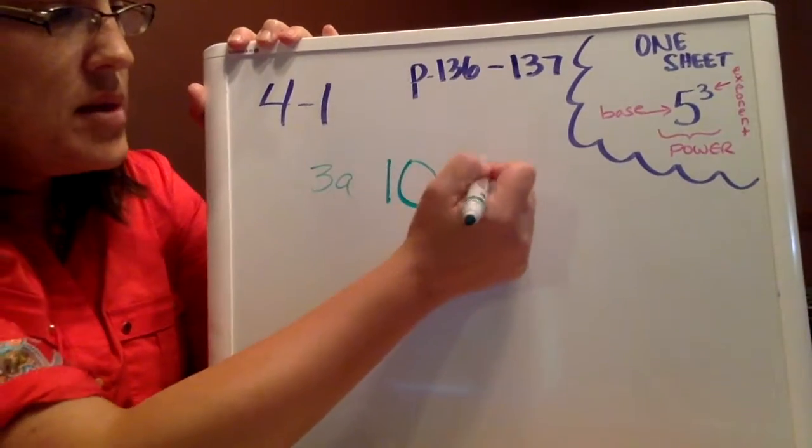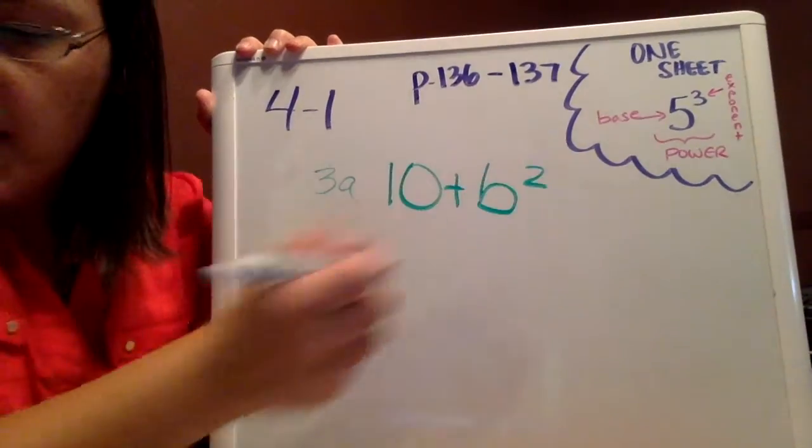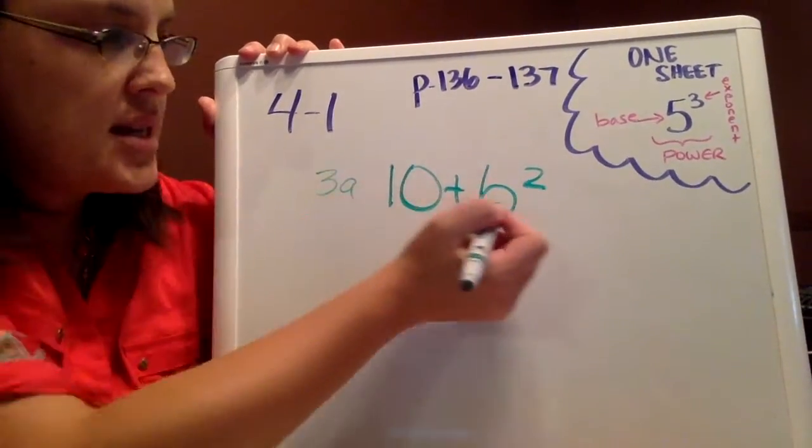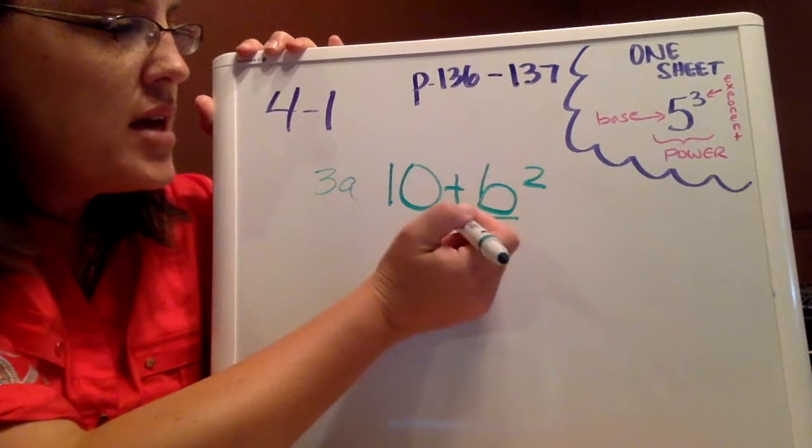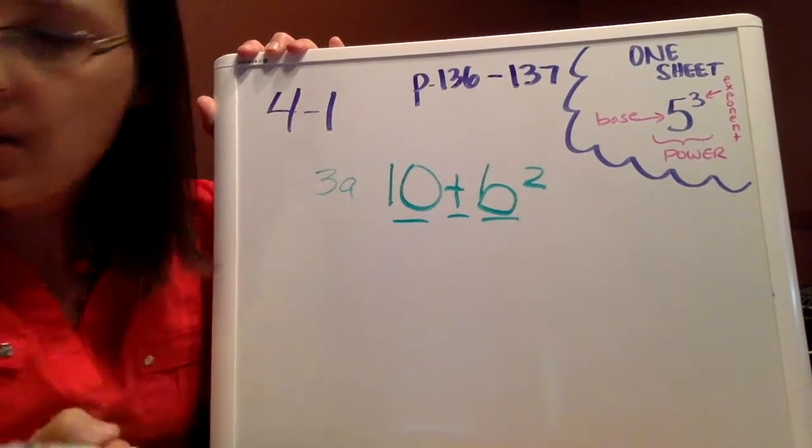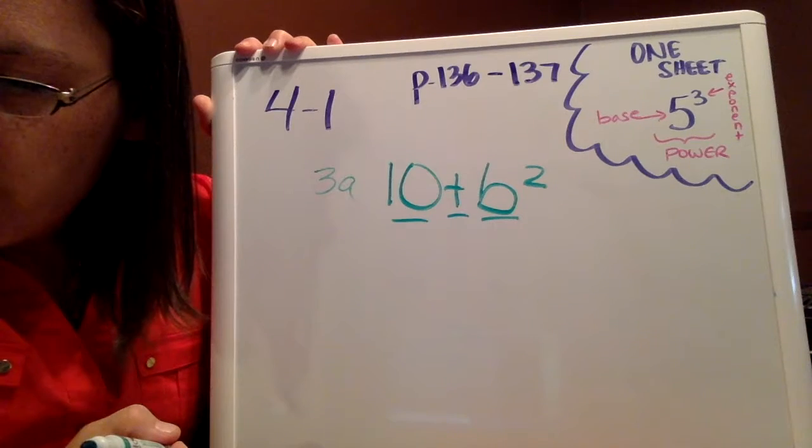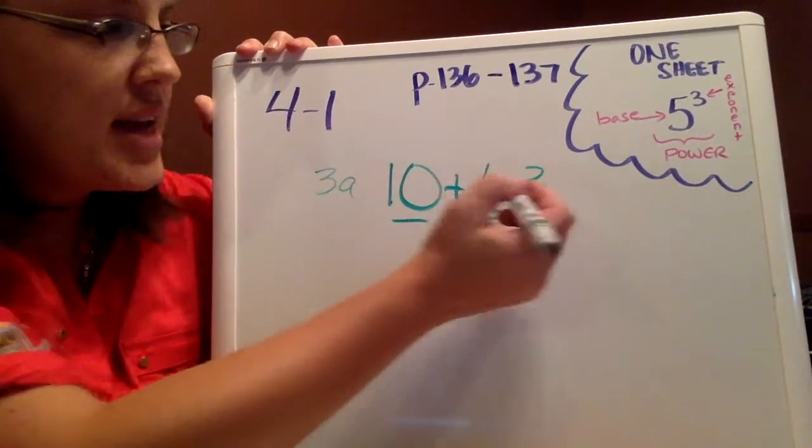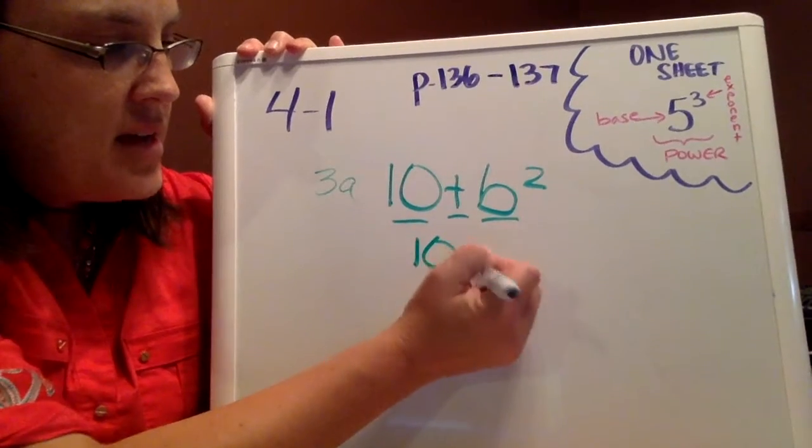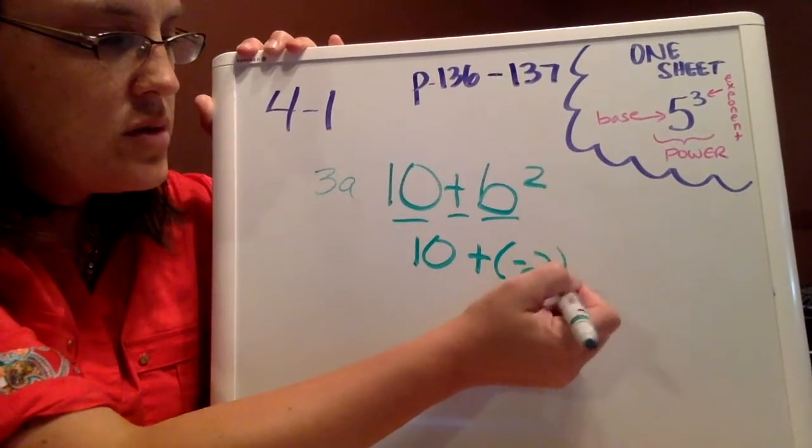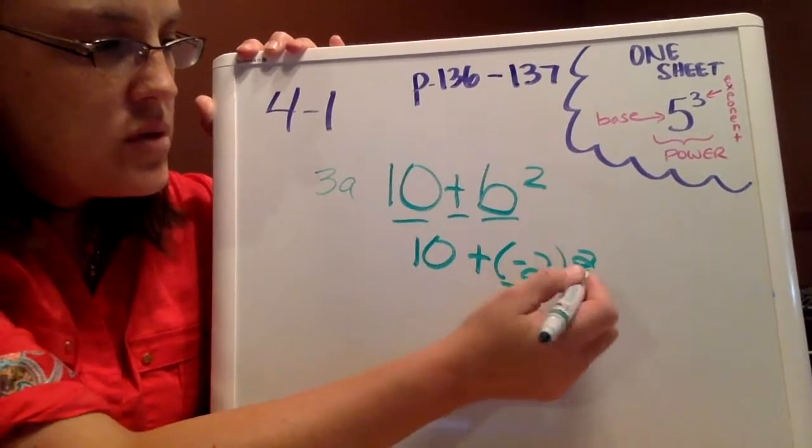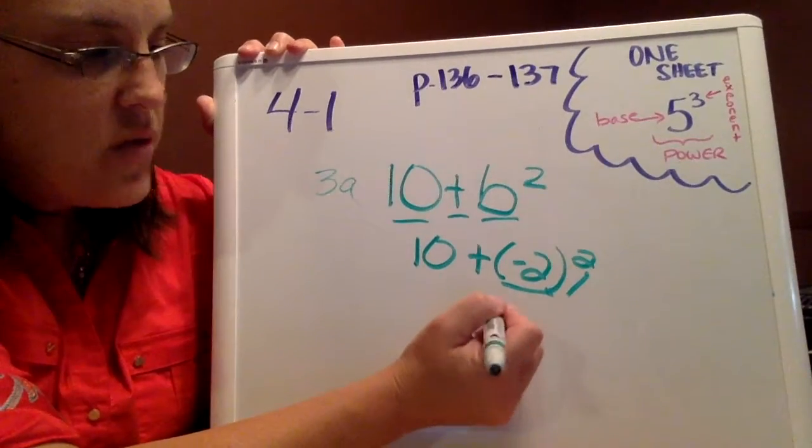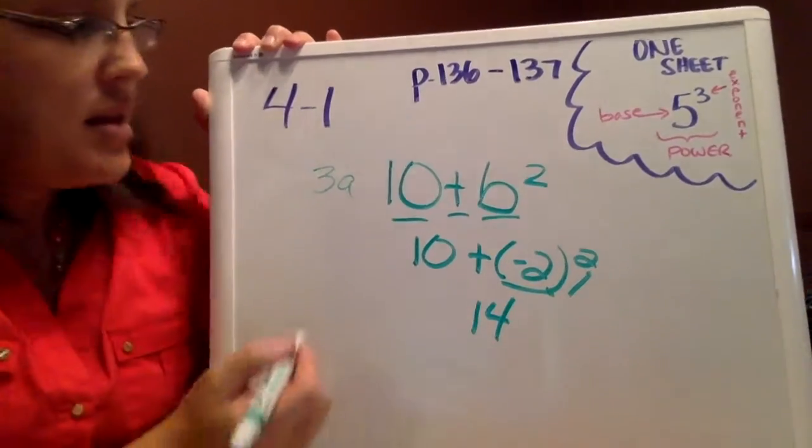3a is 10 plus b squared. Remember this is an algebraic expression because it contains variables and operations, and it may contain numbers. We're going to evaluate it based on what b is. b is negative 2, so we're going to do 10 plus negative 2 squared. Negative 2 squared is 4. 10 plus 4 is 14.